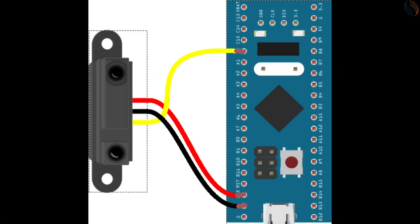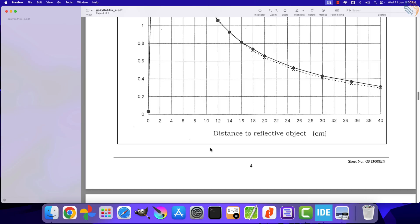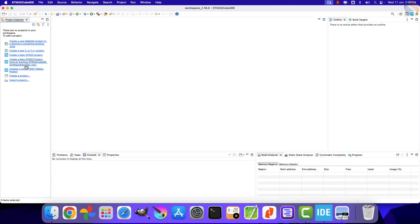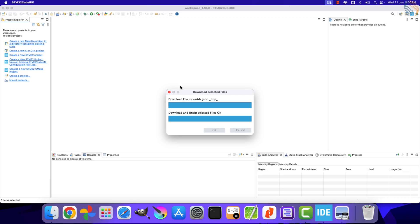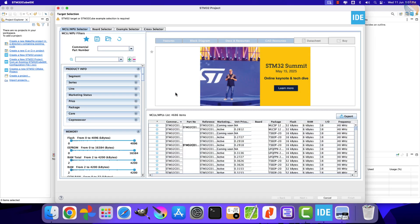Let's take a look at the connection first. The sensor is powered with 3.3 volts from the MCU itself. The signal pin is connected to PA0, which is basically the ADC1 channel 0 pin. That is all for the connection — let's create a new project in Cube IDE.